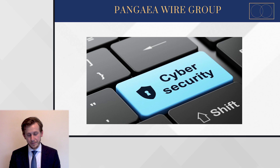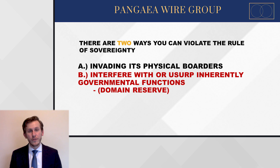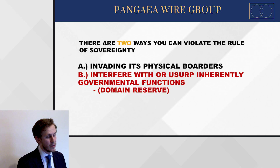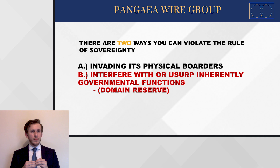When thinking about sovereignty in general, there are two major ways a state actor can violate it: first, by invading its physical borders; and second, by interfering with or usurping inherently governmental functions — in legalese, their domaine réservé — their reserved domain over government functions, whether that's the police force, the army, administering elections, and so forth. If a nation were to usurp or interfere with these, this could be understood as a violation of sovereignty. This second aspect is very important when considering cybersecurity and cyber sovereignty.